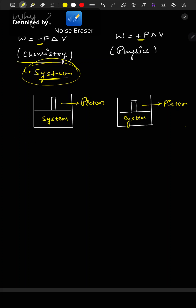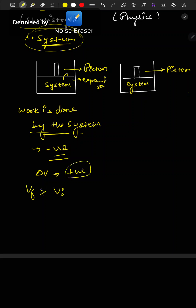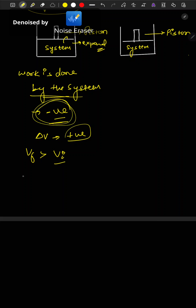In chemistry, if work is done by the system, it is negative. When work is done by the system, it will expand, so delta V will be positive as V final is greater than V initial. We need the work done to be negative, therefore the formula is written as W = -P·delta V.